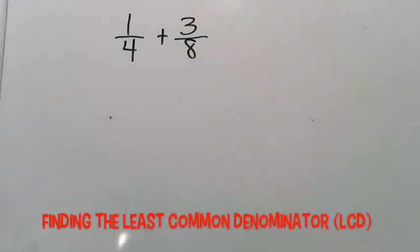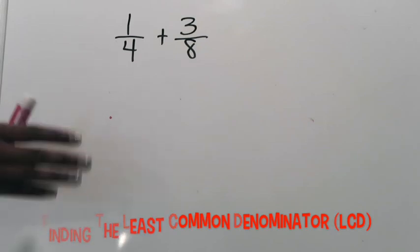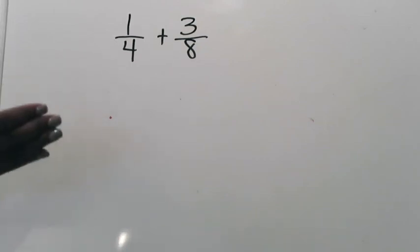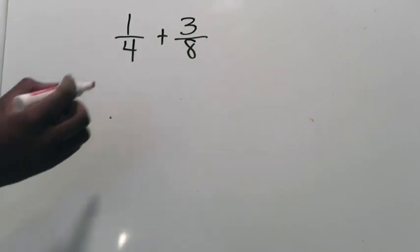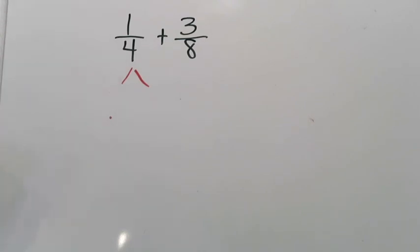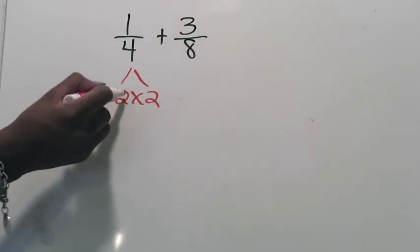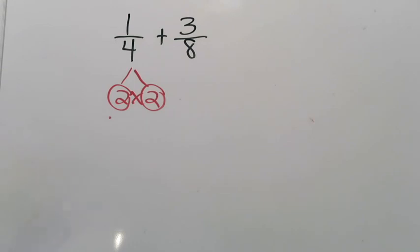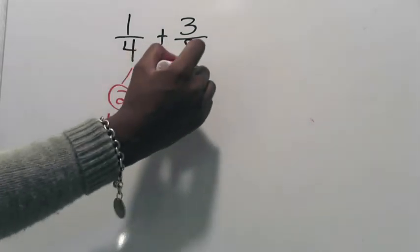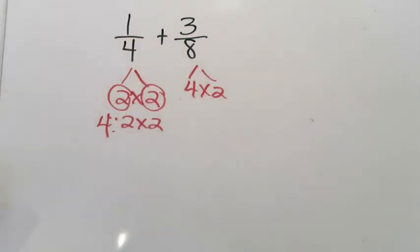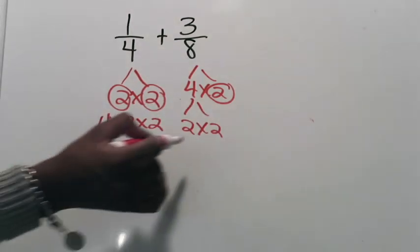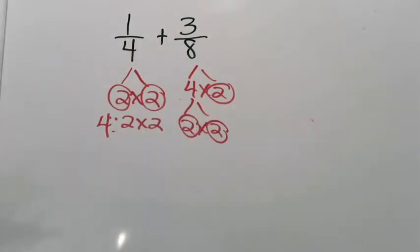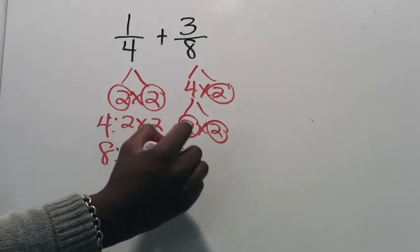Again we're adding 1/4 plus 3/8, but this time I want the least common denominator so I'm as close to simplest form as possible right away. To find the LCD, I prime factor both denominators. For 4: 2 times 2, both prime. For 8: I break it as 4 times 2, then 4 as 2 times 2. So the prime factors of 8 are 2 times 2 times 2.